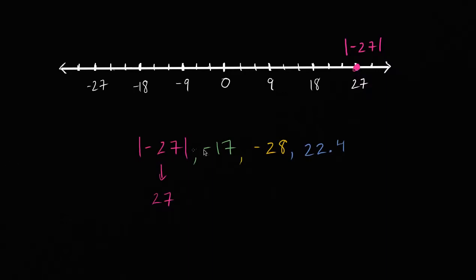All right, then we have negative 17. Well, negative 17, let's see, each hash mark here is 3. So this is negative 9, negative 12, negative 15. So negative 17 is going to be right around there. That is negative 17.